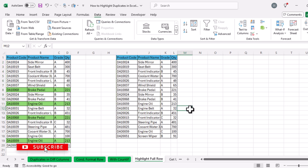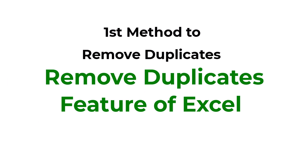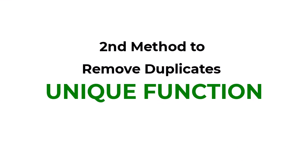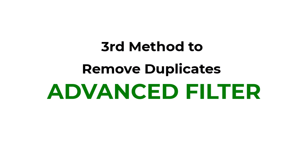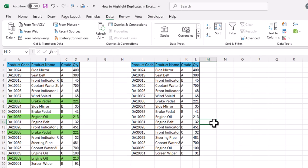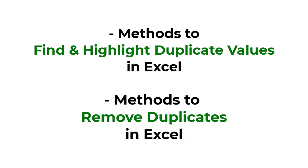These are the three methods to remove duplicate values in Excel: the Remove Duplicates feature, the UNIQUE function, and Advanced Filter. We discussed how to find, highlight, and remove duplicate values in Microsoft Excel. Hope you liked this video and learned something from it. Please give a thumbs up and subscribe to our YouTube channel. Thanks for watching — see you in the next video!